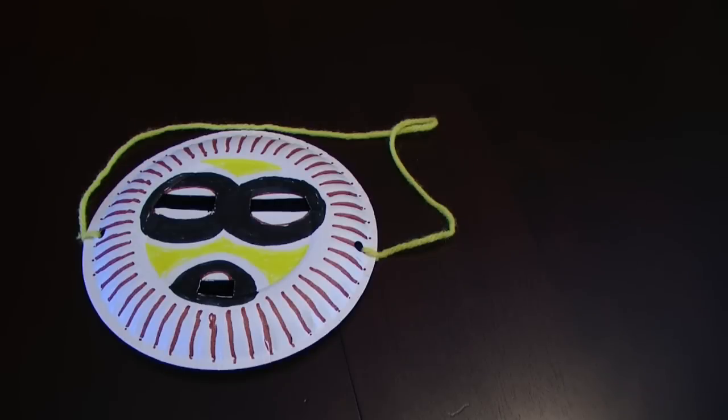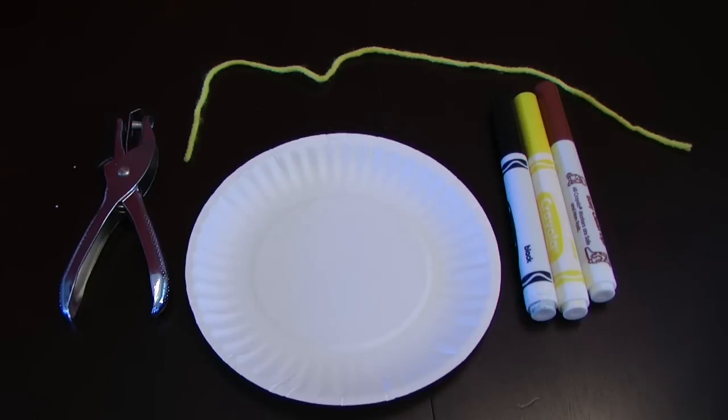The next idea is to make an African mask that the kids will decorate. The materials are a hole punch, yarn, paper plate, and markers.